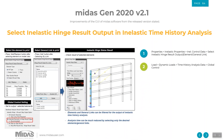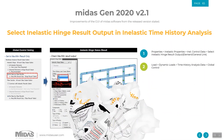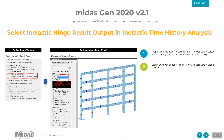We can now filter elements and general links for the output of inelastic time history analysis. Filtering of results and selecting the best results is very important in order to easily view what is needed after performing the analysis. When doing advanced analysis types like fiber analysis, the results summary table of fiber beam or wall for inelastic hinges is now also available in this release.